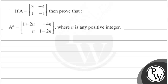Hello, let's see the question. The question says, if A is equal to matrix [3, -4; 1, -1], then prove that A^n is equal to [1+2n, -4n; n, 1-2n], where n is any positive integer.